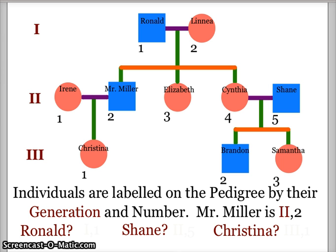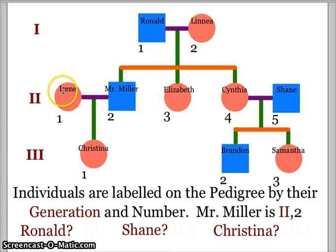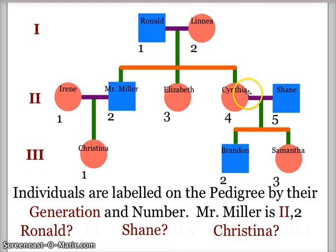This is my family. This is my dad Ron and my mom Linnea. This is me, Mr. Miller. I have two sisters, Elizabeth and Cindy. I am married to Irene and we have a daughter, Christina. My sister Cindy is married to Shane, and I have a nephew Brandon and a niece Samantha.